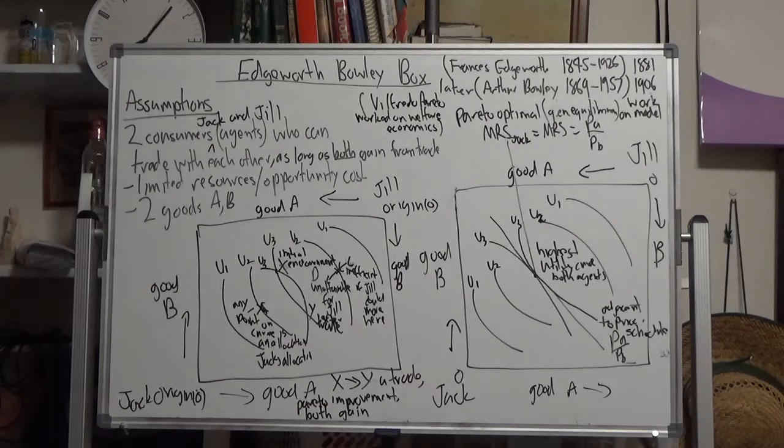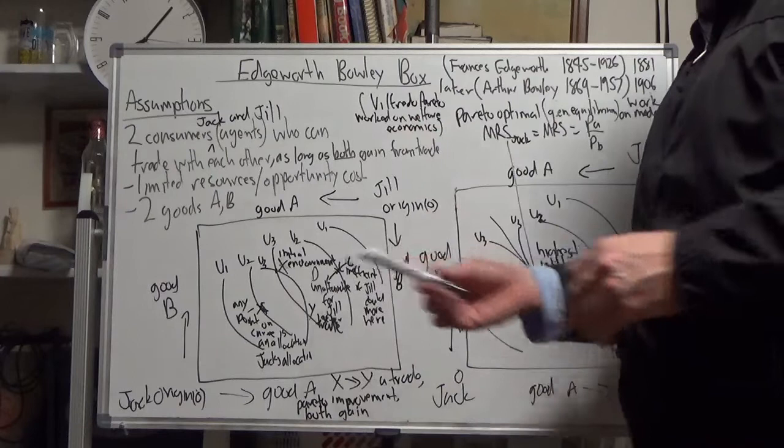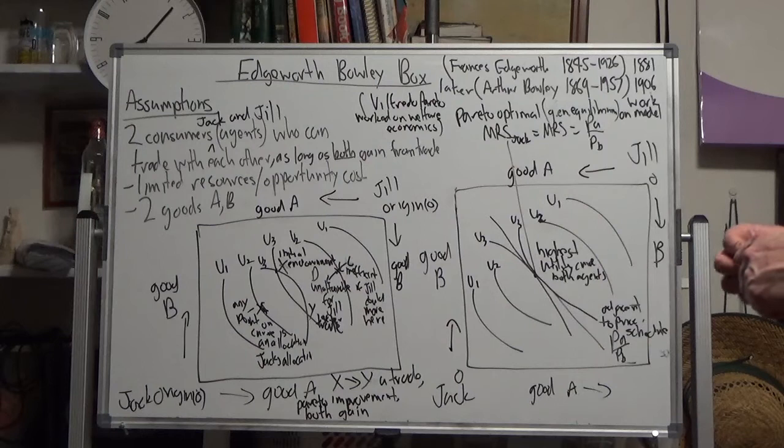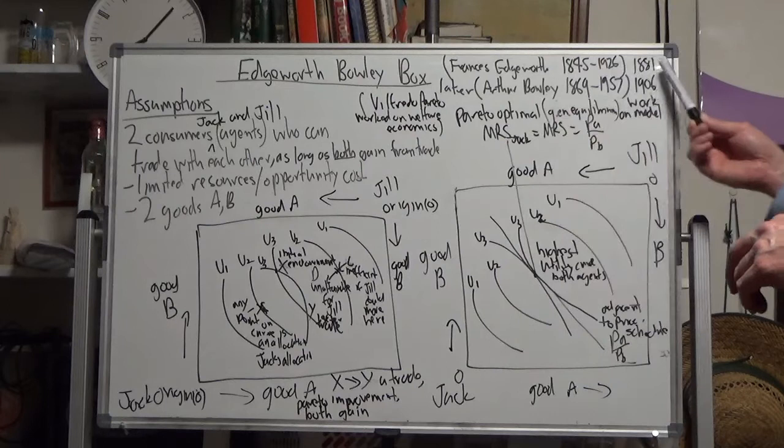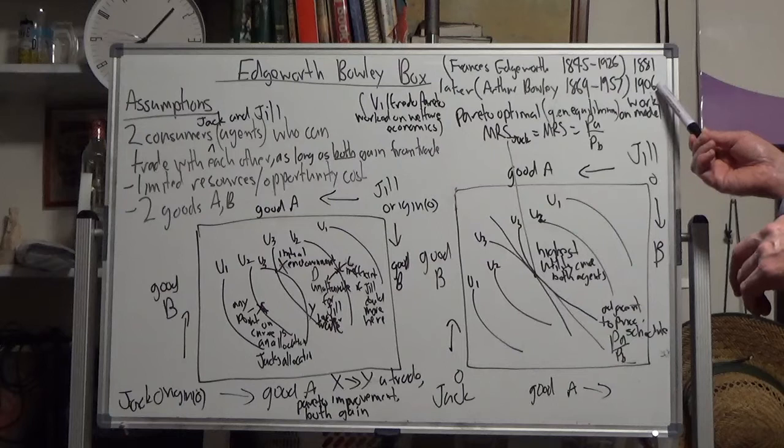Now we're going to introduce in welfare economics the concept of the Edgeworth-Bowley box. We're incorporating two consumers who can trade with each other, Jack and Jill. The Edgeworth-Bowley box was put forward by Francis Edgeworth at Cambridge University in the UK, and he met and worked with Arthur Bowley who was also at Cambridge. He put that forward back in 1881, and Bowley, an economist and statistician, worked on it with additional concepts in 1906.